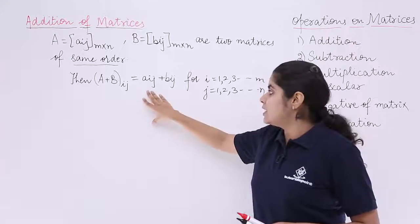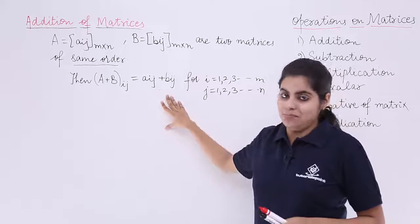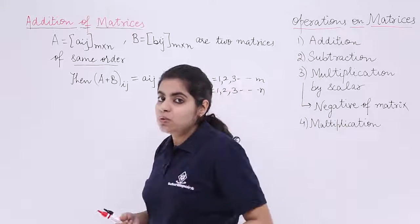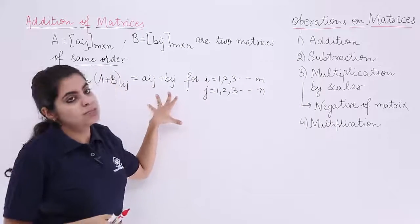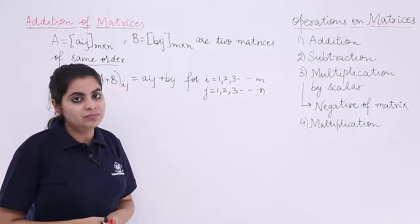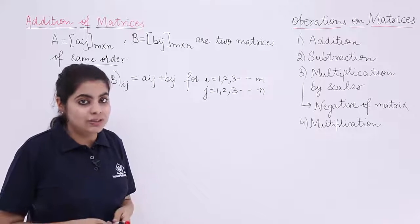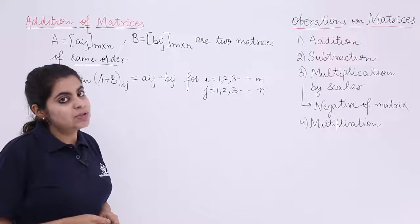So A plus B subscript ij is equal to Aij plus Bij. Now putting the values i and j equal to 1, then it is A11 plus B11 and so on. Now even if it is not understood till now, let's take some examples to understand the same.